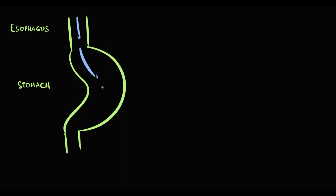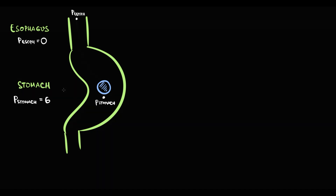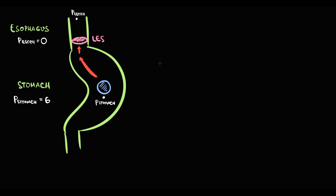When we intake food, it travels under the force of gravity from the esophagus into the stomach. The esophagus is located in the thoracic cavity, so the pressure inside the esophagus is equal to intrathoracic pressure — approximately zero. The stomach is located in the abdominal cavity, and the pressure inside the stomach equals intra-abdominal pressure — approximately six. Because pressure inside the stomach is higher, stomach content tends to flow back into the esophagus by the pressure gradient. The only structure that prevents this reflux is the lower esophageal sphincter.